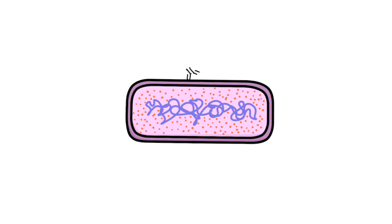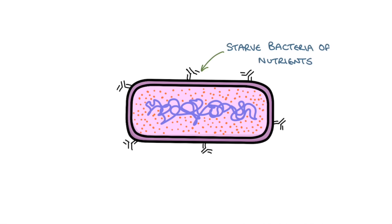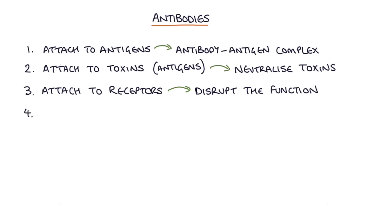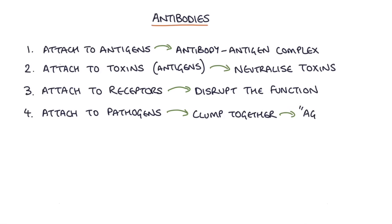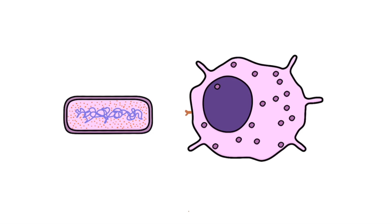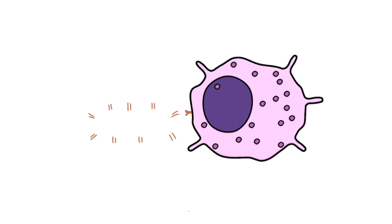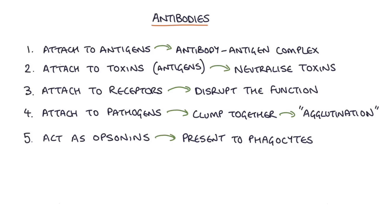Or antibodies could bind to receptors in a bacterial cell wall that are important for the cell taking in essential nutrients, thereby starving the bacteria and reducing its pathogenicity. Fourthly, antibodies can attach themselves to pathogens and clump together to slow the spread of pathogens, and this is called agglutination. Fifthly, antibodies can act as opsonins, attaching themselves to pathogens and making it easier for phagocytes to recognize and destroy those pathogens that would otherwise not have been recognized.